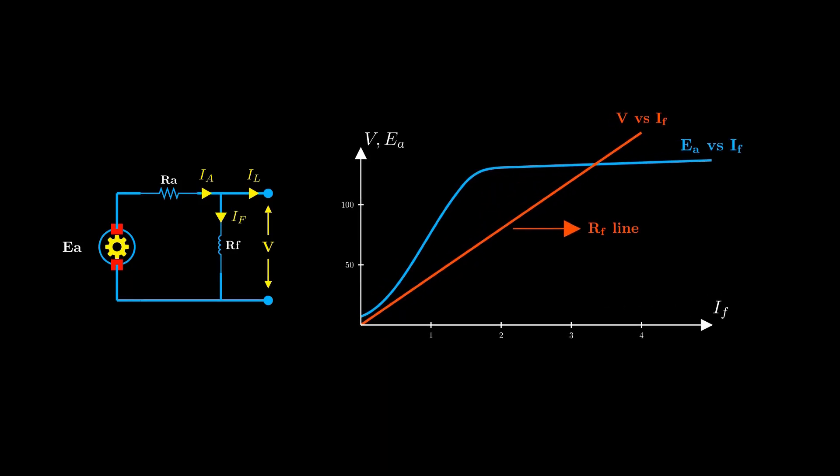More flux means more induced EMF, more EMF means more field current, and more field current creates even more flux. This rapid, self-reinforcing process is called voltage buildup.